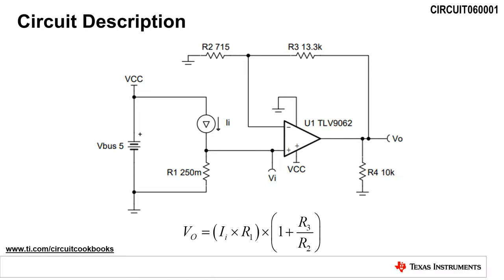This circuit is commonly used to convert a load current to a voltage so that it can be digitized by an analog to digital converter, or ADC. Since most ADCs are operated with a single supply voltage, the circuit is also designed to operate with a single supply.